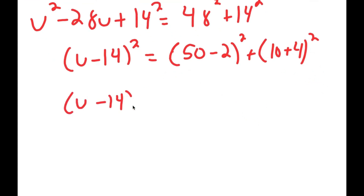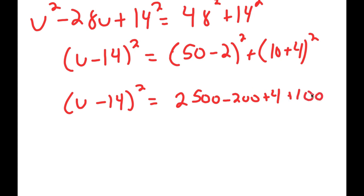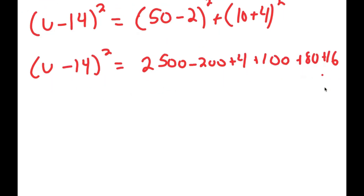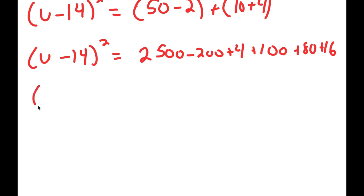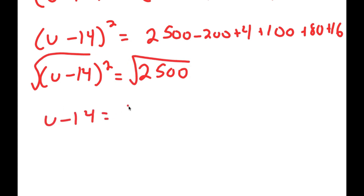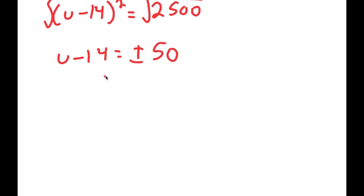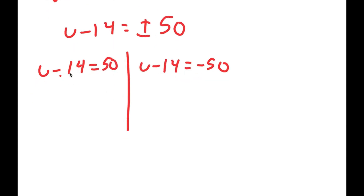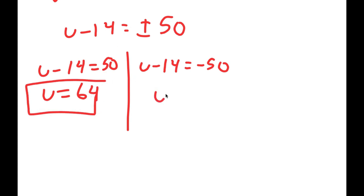Expanding: u minus 14 squared equals 2500 minus 200 plus 4 plus 100 plus 80 plus 16. Adding these up gives u minus 14 squared equals 2500. Taking the square root on both sides: u minus 14 equals positive or negative 50. This gives two equations: u minus 14 equals 50, so u equals 64; and u minus 14 equals negative 50, so u equals negative 36.